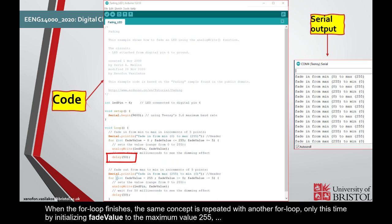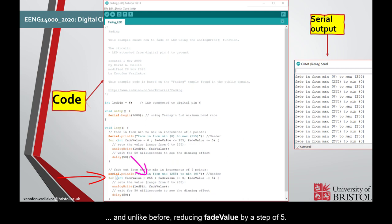When the for loop finishes, the same concept is repeated with another for loop, only this time by initializing fade value to the maximum value, 255, and unlike before, reducing fade value by a step of 5.